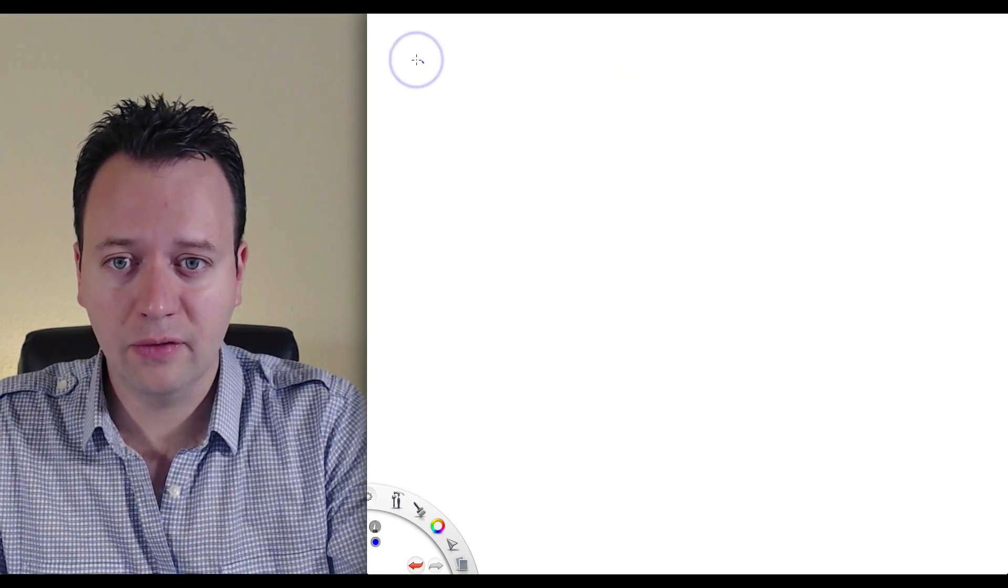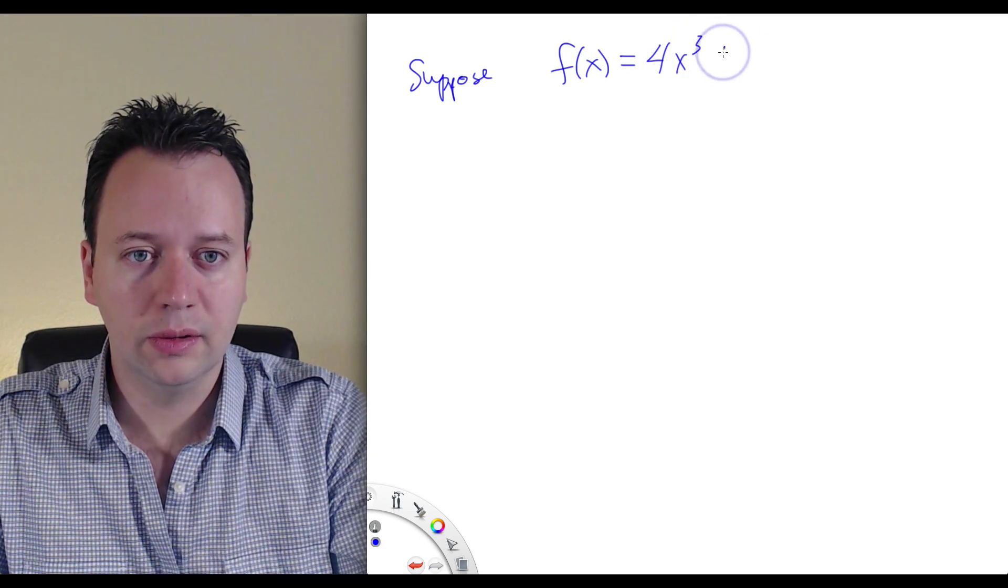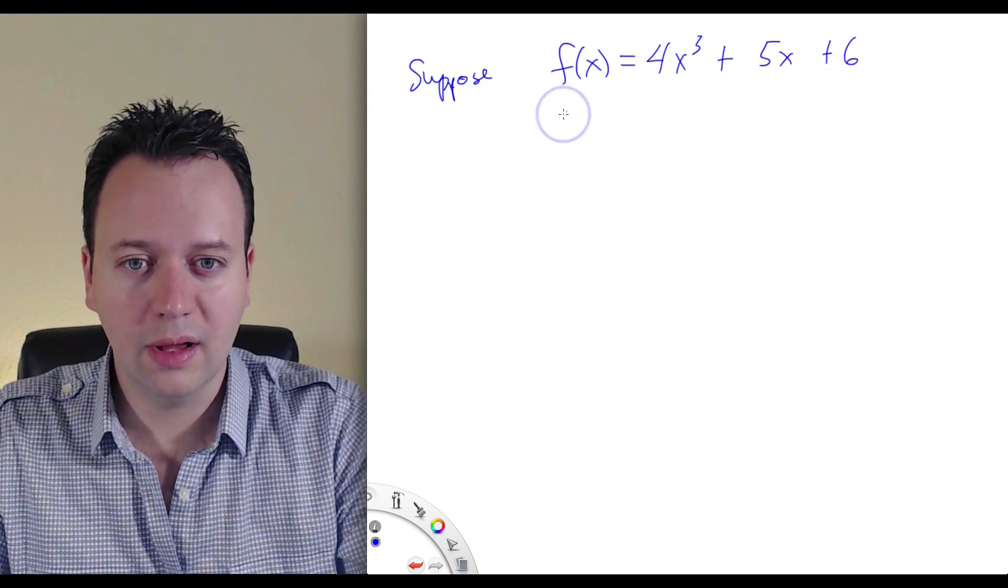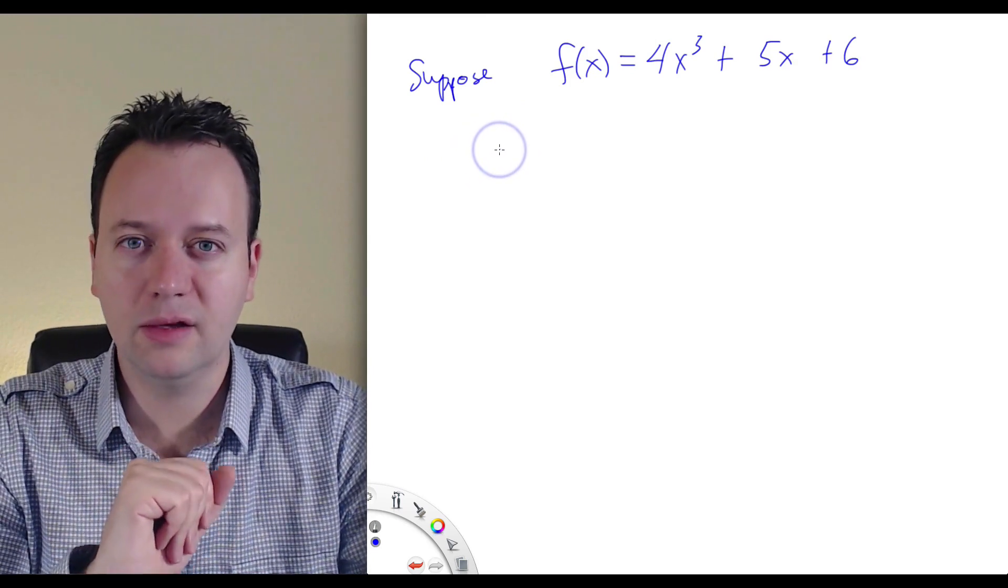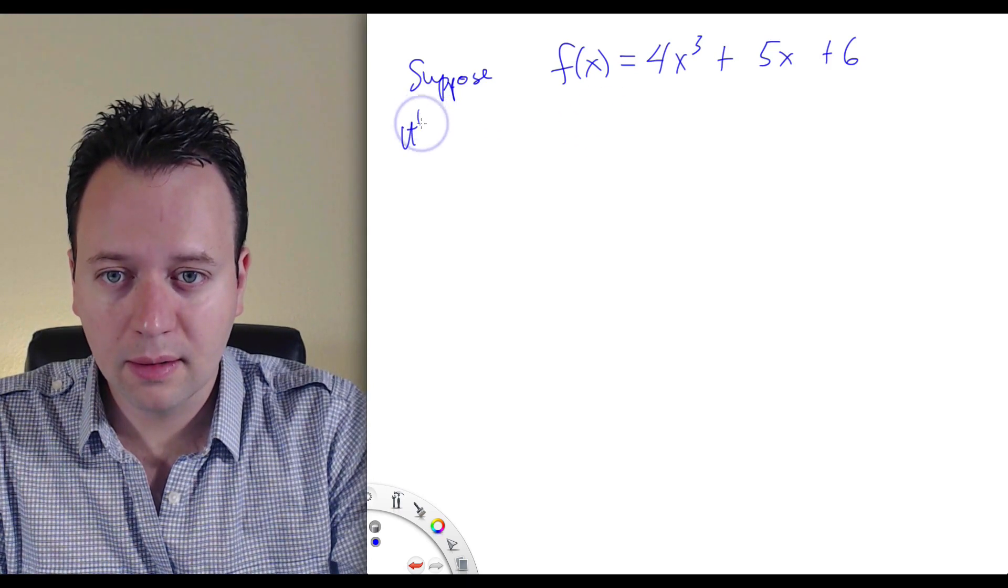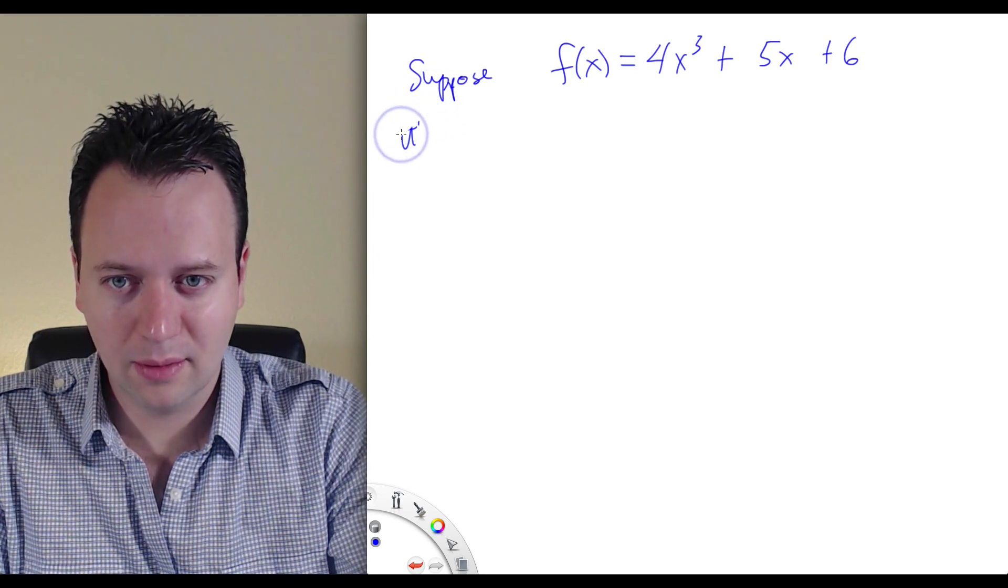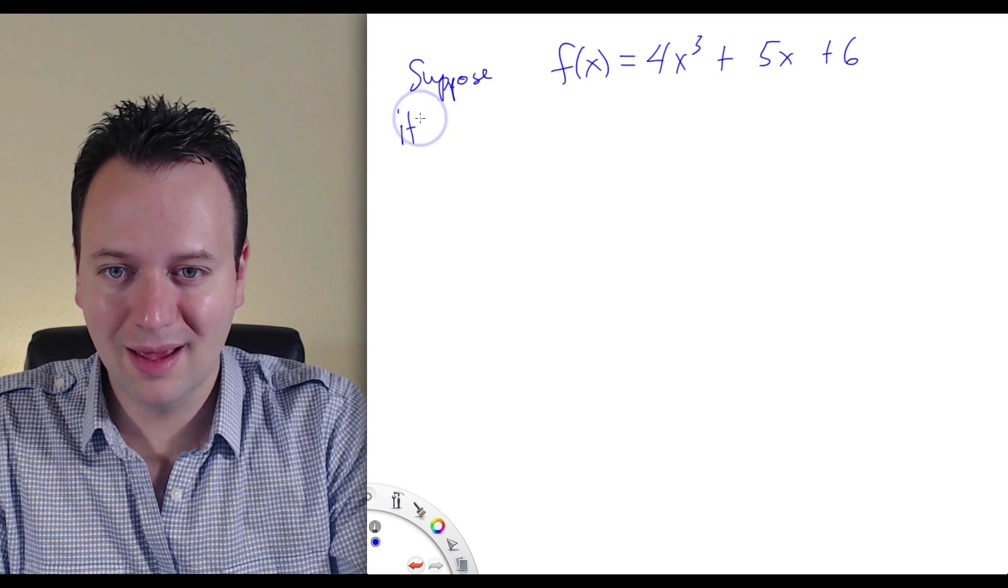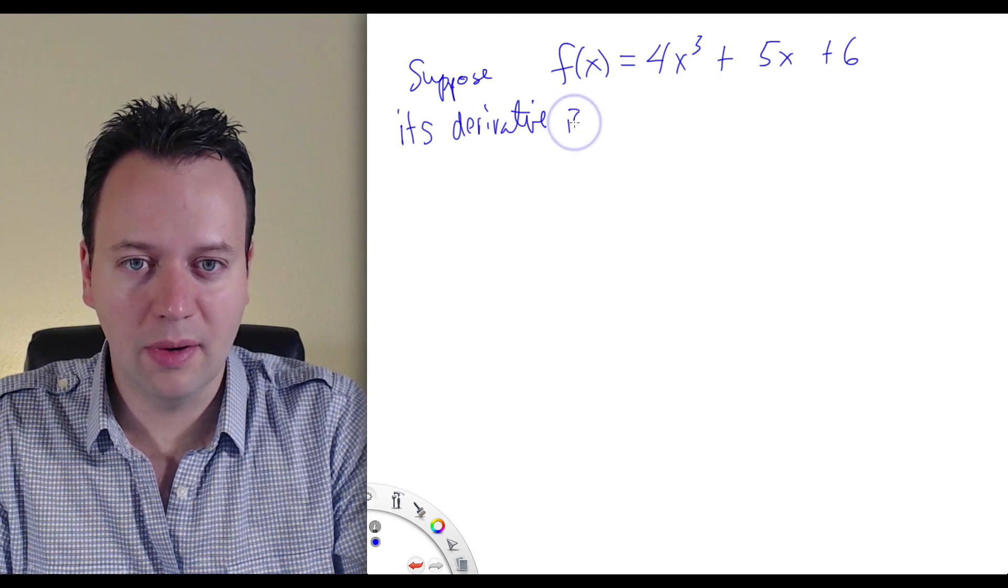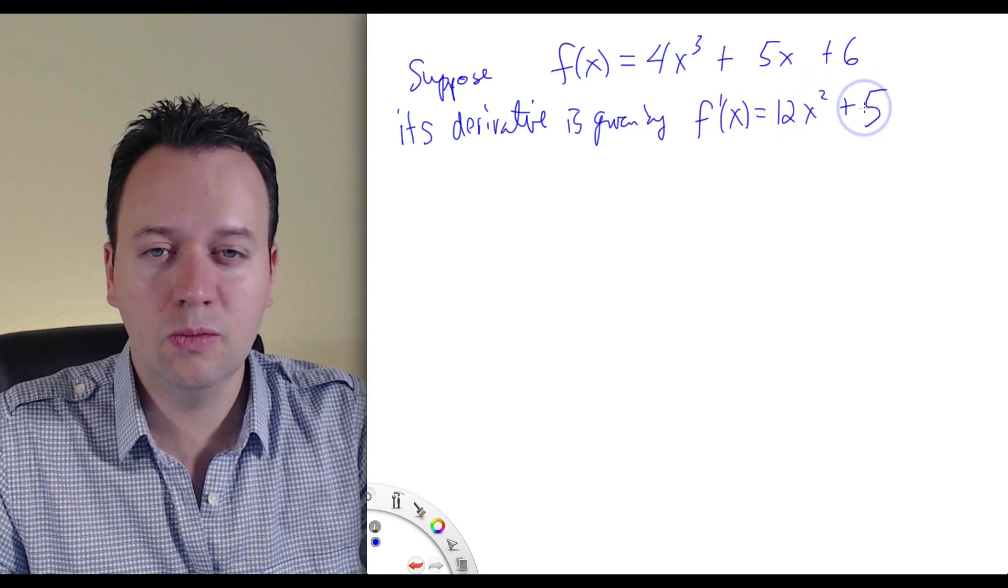So let's see an example of this. Suppose that we have f(x) equals 4x cubed plus 5x plus 6. Now, given those simple techniques that I told you that you'll learn later, you'll soon enough be able to just look at this function and know its derivative right away. So its derivative is given by f prime of x equals 12x squared plus 5. So you'll soon know how to compute that.